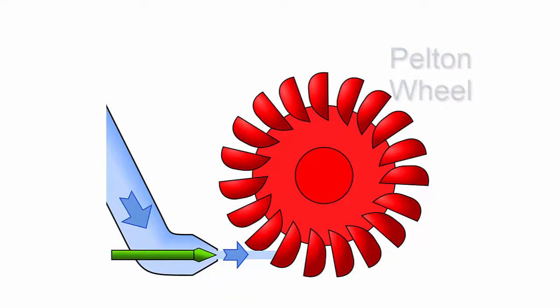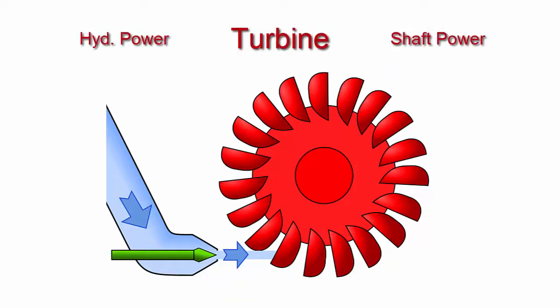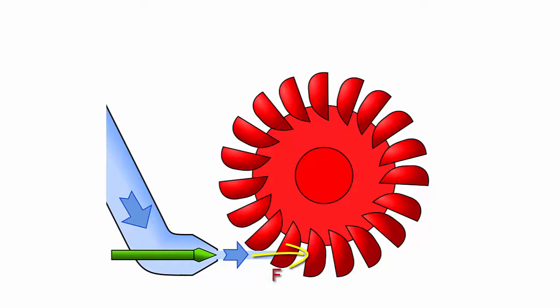We all know that the turbine actually converts the hydraulic energy to mechanical energy. It means the energy from the water jet creates a force on the turbine blades. The force then turns out as a torque from the turbine.